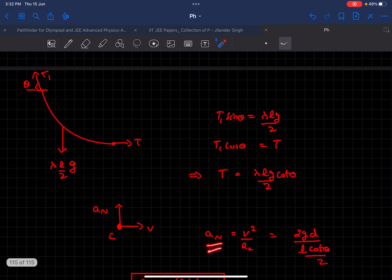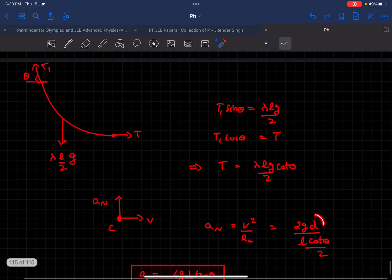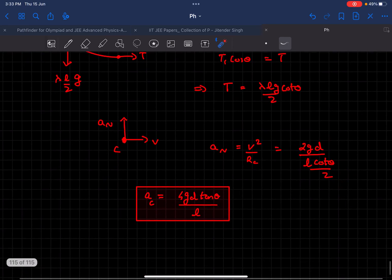Now as we have everything, we can just find the normal acceleration to be the speed squared divided by the radius of curvature, and that is 2gd·(2cotθ)/l. This will be your final acceleration of the bead at the bottommost point. Thanks for watching!